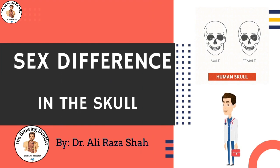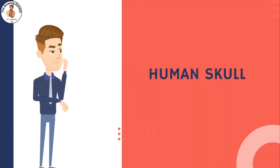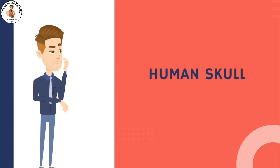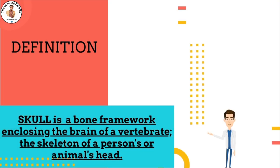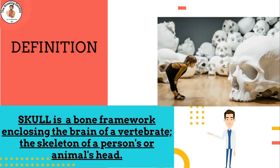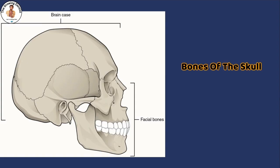In this lecture, we will discuss the difference in male and a female skull. The human skull is the skeletal framework of the head of vertebrates, composed of bones or cartilage. It is anterior to the spinal column and is the bony structure that encases the brain. Its purpose is to protect the brain and allow attachments for the facial muscles.